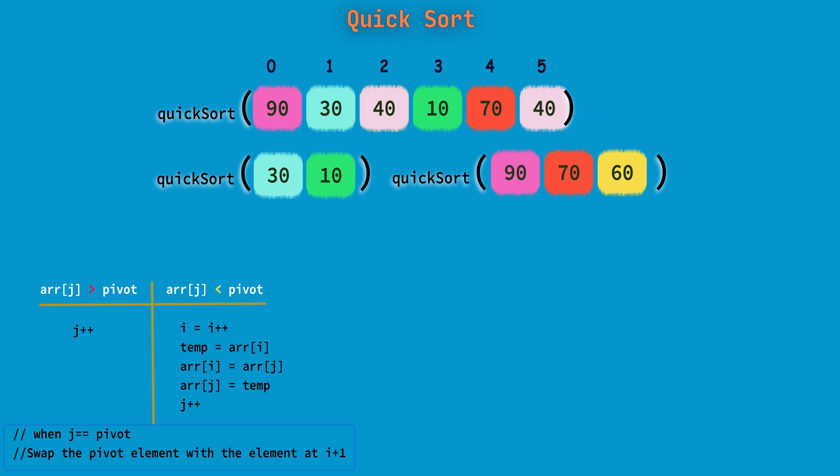Again QuickSort will call on the left side and right side. Then choosing pivot from the partition and initializing i and j. Now 30 is greater than the pivot element 10, so j will be moved. Now j is equal to pivot. Since j reaches pivot, we will increment i. Now i will point to 30. Then we will swap i and j.